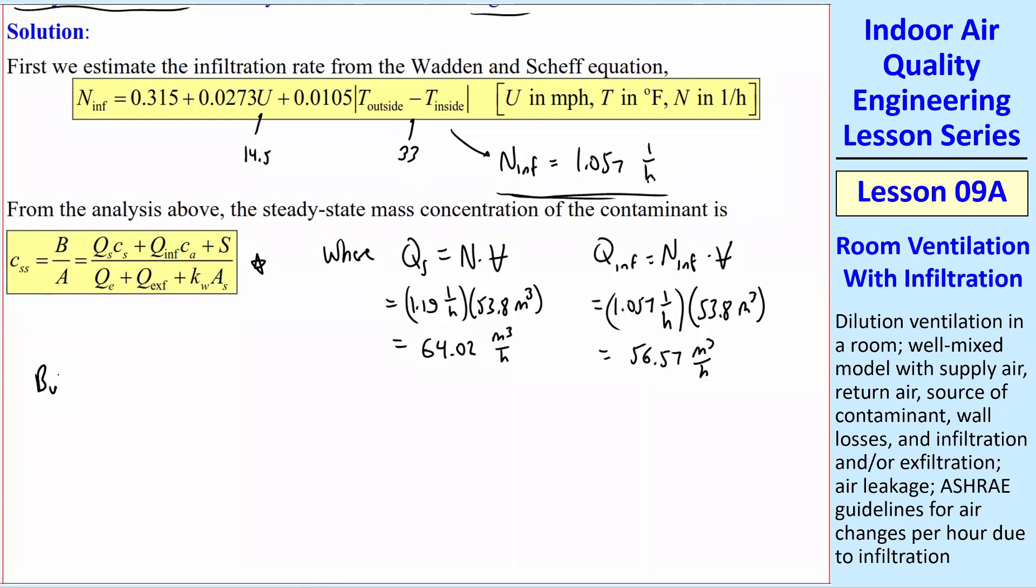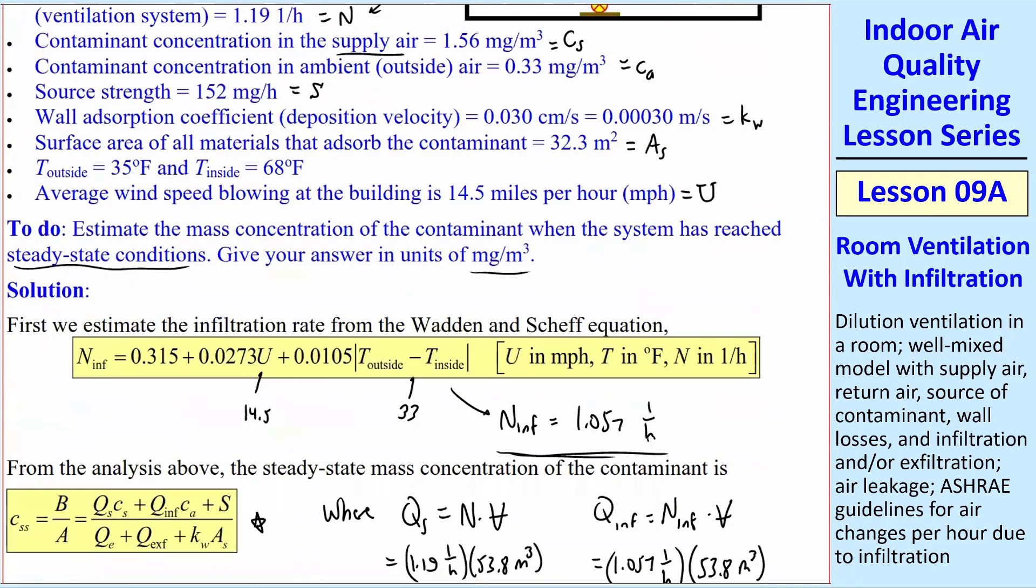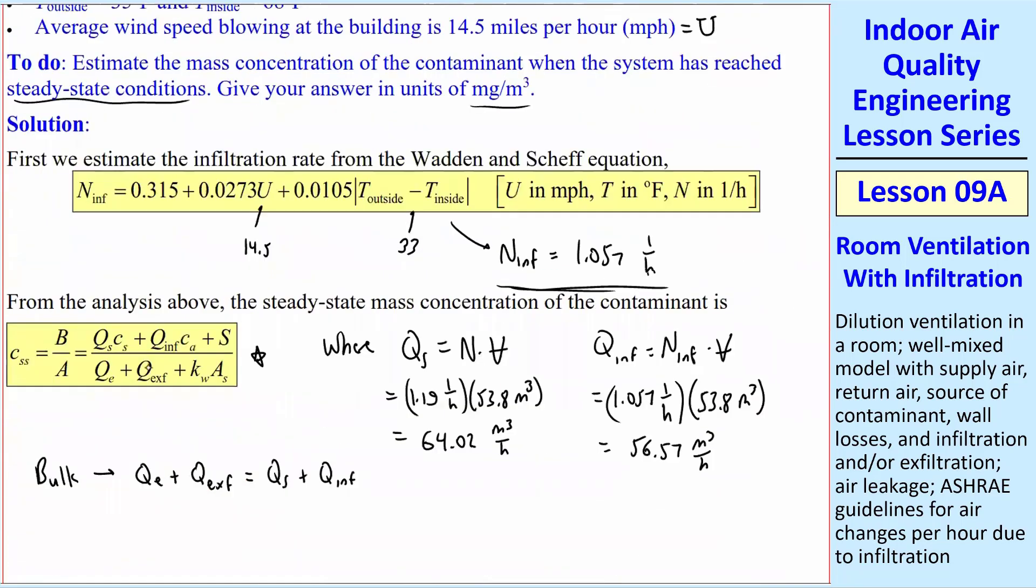And we also have the bulk air: Q_E plus Q_EXF is equal to Q_S plus Q_INF. I don't really care how the split is between Q_E and Q_EXF. I don't care how much goes out this exit and how much goes out this exit since they both have the same C. All I care about is the total Q_E plus Q_EXF. And that appears together in this denominator. So we're going to let that equal Q_S plus Q_INF. We have Q_S and we have Q_INF.